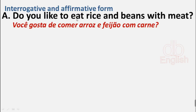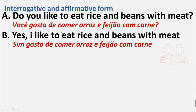Interrogative and affirmative form. A: Do you like to eat rice and beans with meat? B: Yes, I like to eat rice and beans with meat.